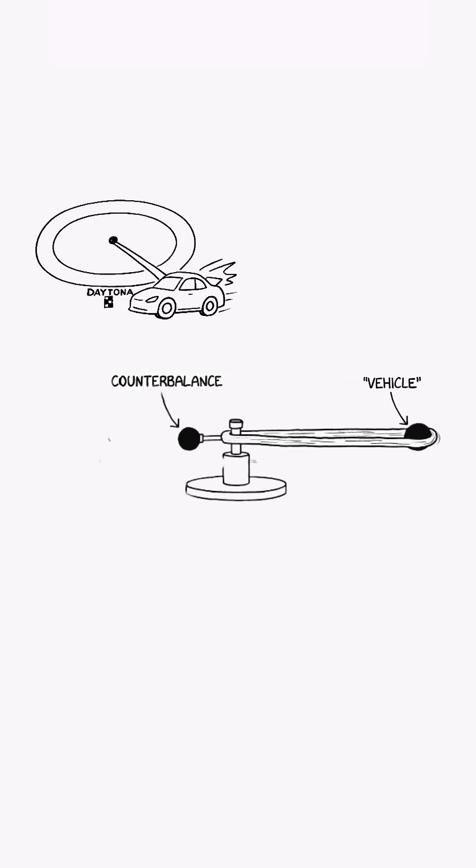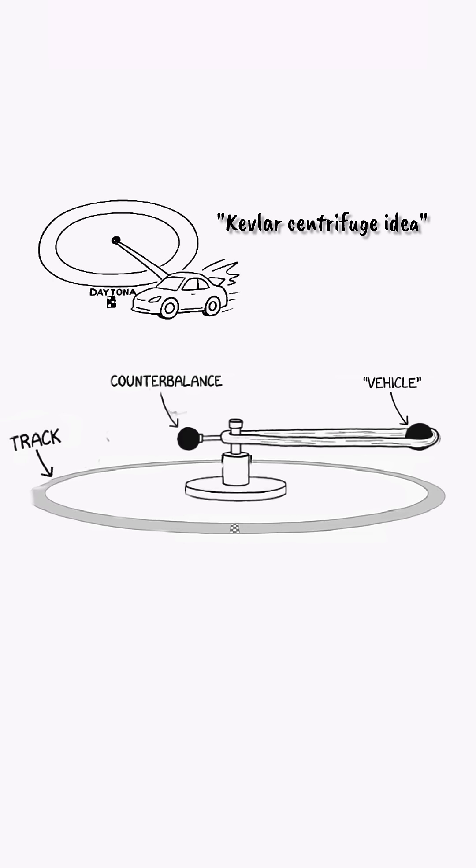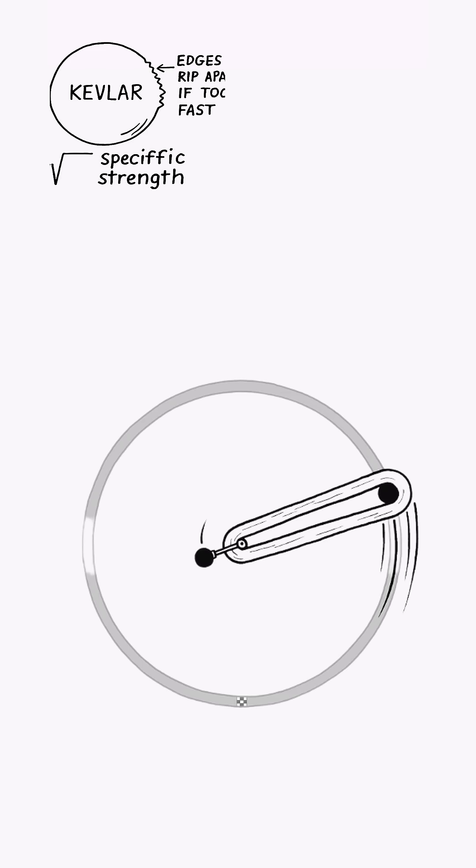Well, let's imagine a vehicle attached with Kevlar straps to a pivot in the center of a similarly sized circular track. In effect, this is a giant centrifuge.